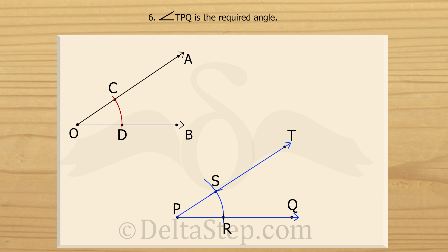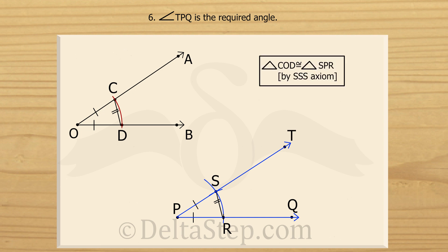We measured the distances OC and OD not using a scale but using a compass, and found the points S and R at the same distances from P respectively. We did the same for CD to make CD equal to SR. Basically, we took C, O, and D as the vertices of a triangle and made another triangle SPR with the same side lengths as triangle COD. Since all corresponding sides of the two triangles are equal, the angles must be equal too — by the SSS axiom of congruency. This is how we construct an angle equal to a given angle using a ruler and a compass.